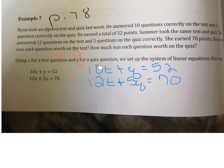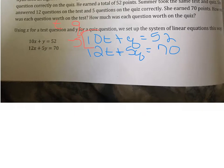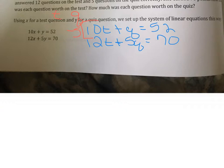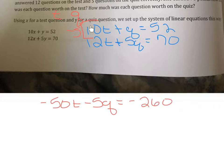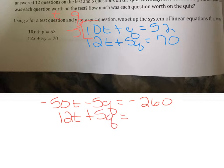Using elimination, the coefficient of q in the first equation is 1, so it's easy to turn it into negative 5 to eliminate the q's. I multiply the entire first equation by negative 5, giving: negative 50t minus 5q = negative 260. Don't forget you're distributing — negative 5 times 52 gives negative 260. The second equation stays unchanged: 12t + 5q = 70.